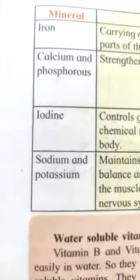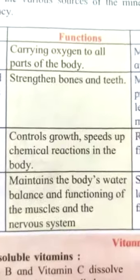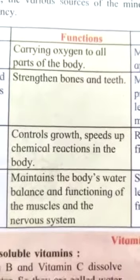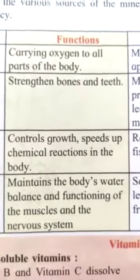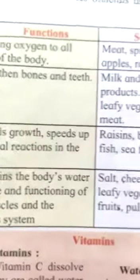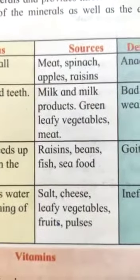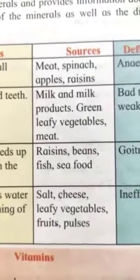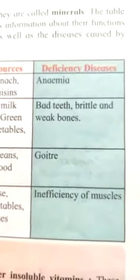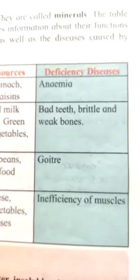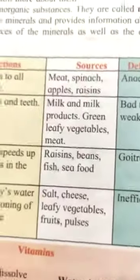Mineral: sodium and potassium. Function: maintains the body's water balance and functioning of muscles. Sources: salt, cheese, leafy vegetables, fruits and pulses. Deficiency: muscles do not work properly.